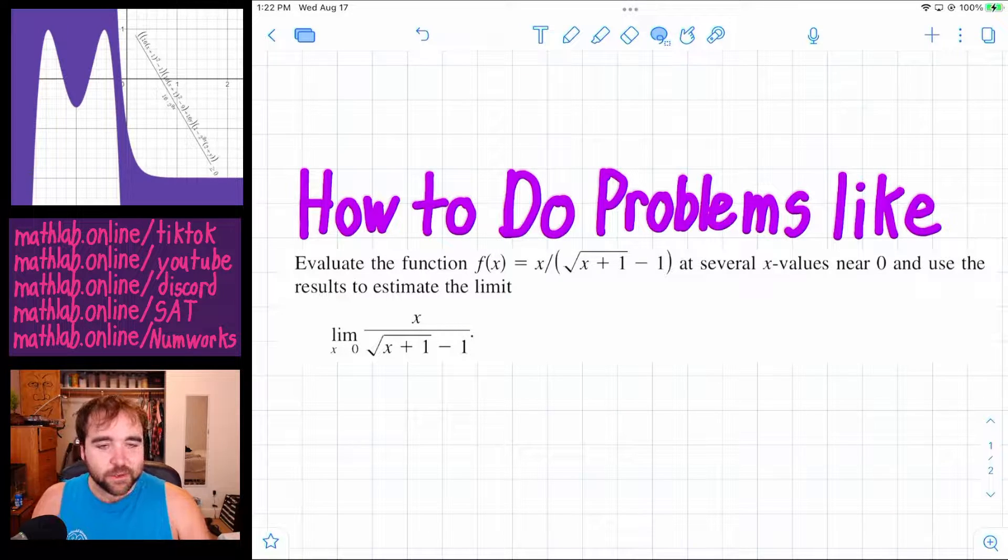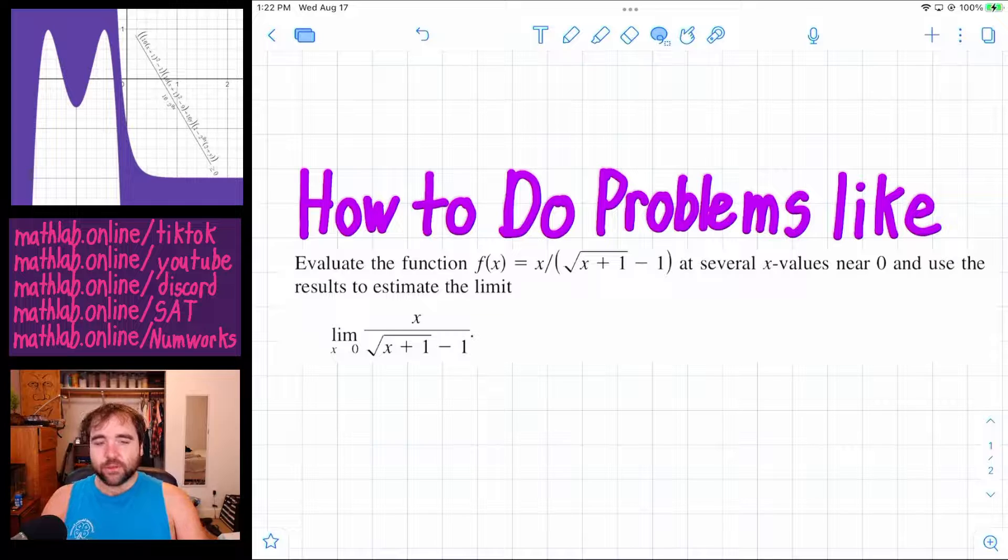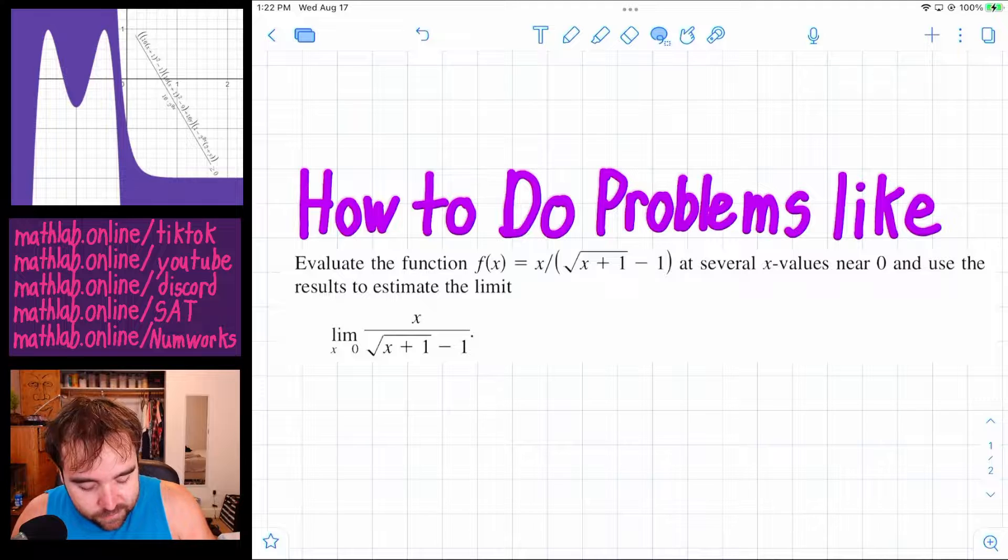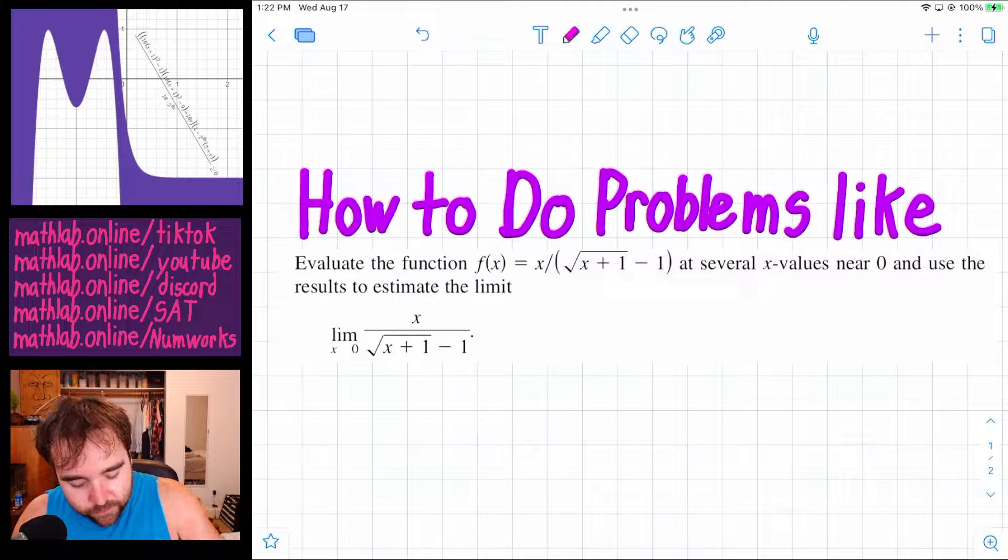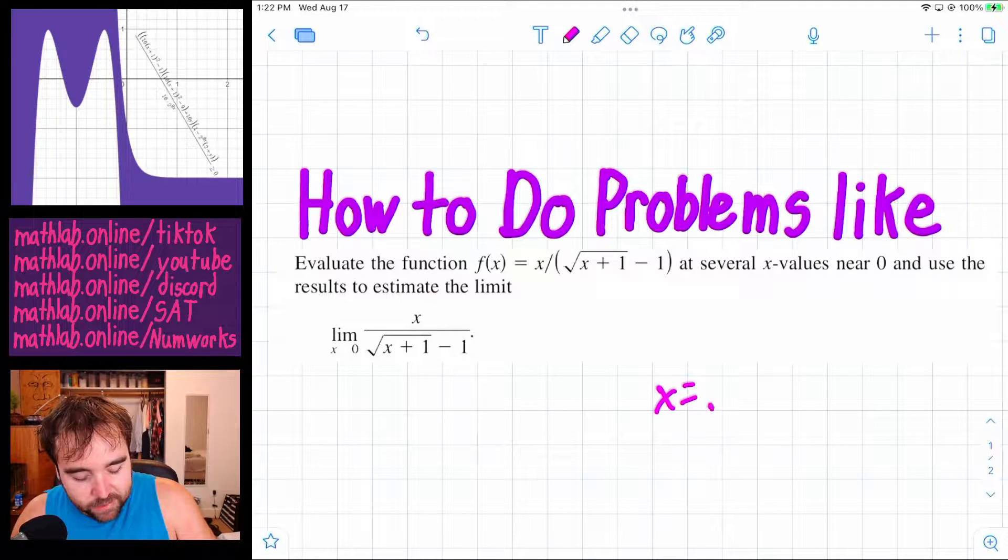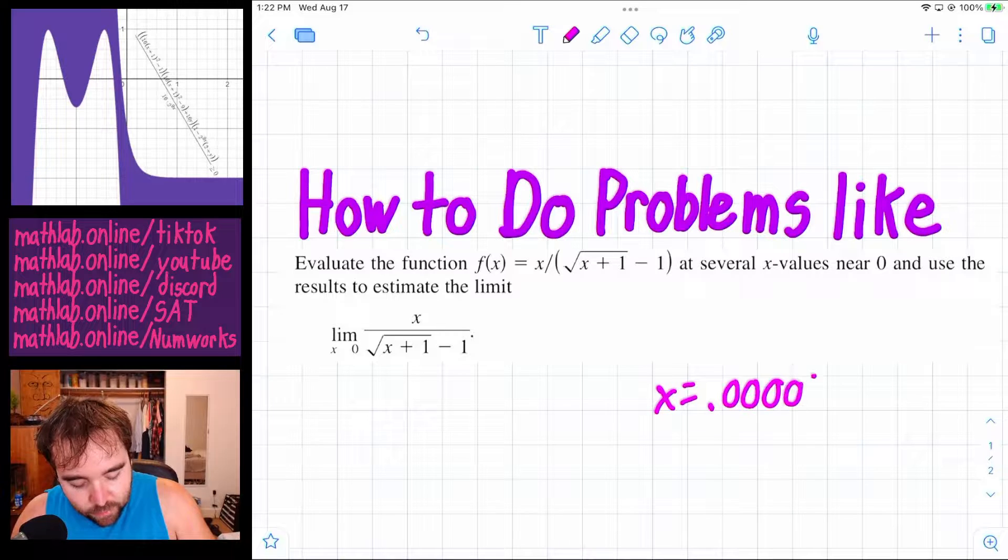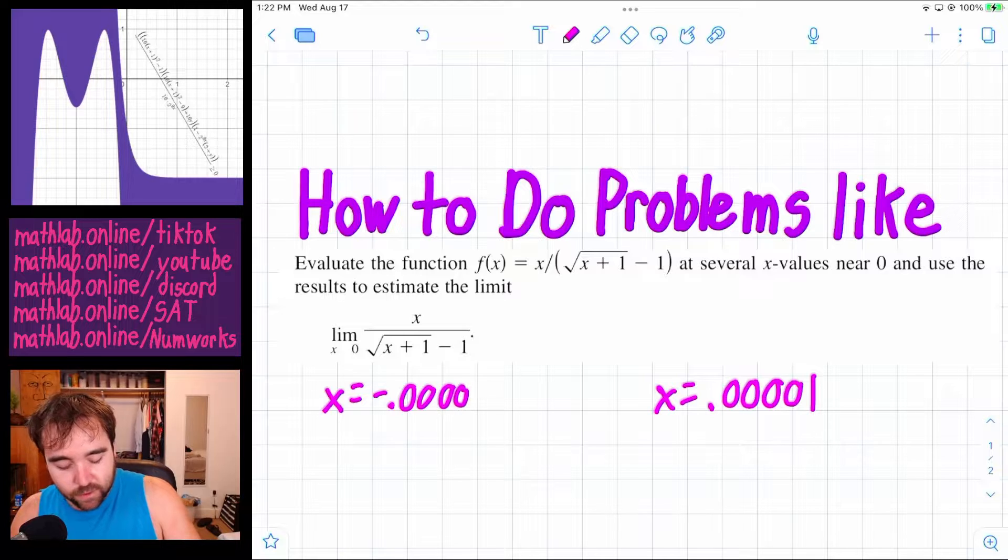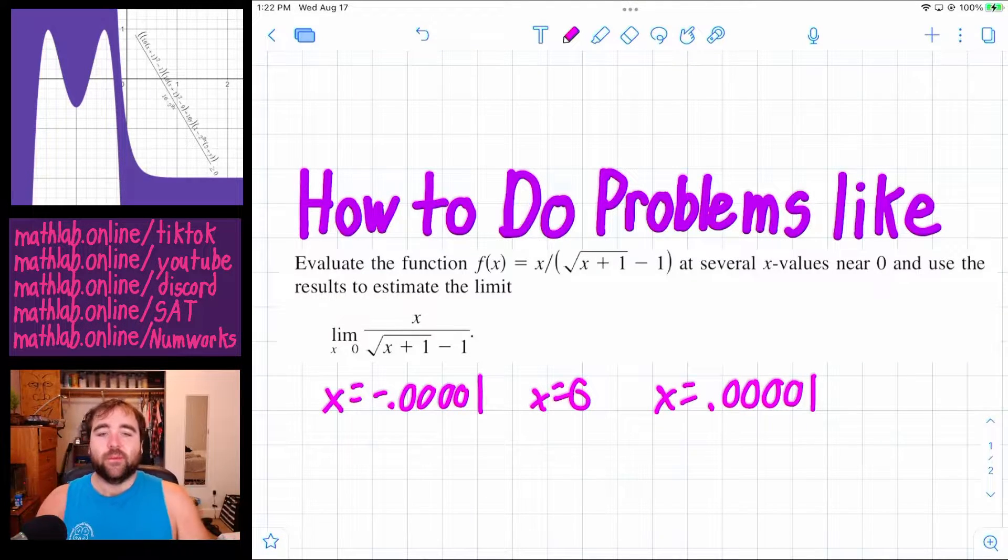All they're telling us to do is plug in values really close to zero and see what we get. So we're just going to do that. We're going to plug in something like x equals 0.0001 and something like x equals negative 0.00001, because see how x equals 0 is in the middle of that.